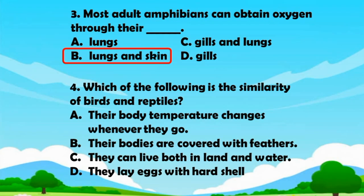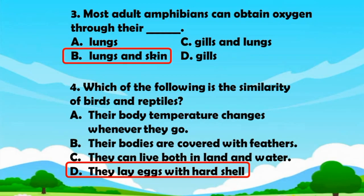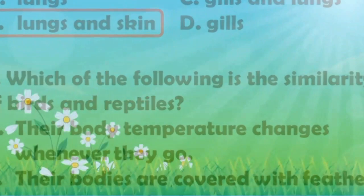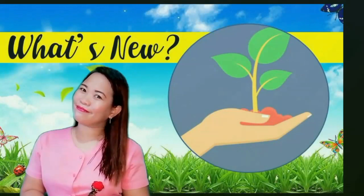Question number four. Which of the following is the similarity of birds and reptiles? A. Their body temperature changes whenever they go. B. Their bodies are covered with feathers. C. They can live both in land and water. D. They lay eggs with hard shell. The answer is Letter D. They lay eggs with hard shell.